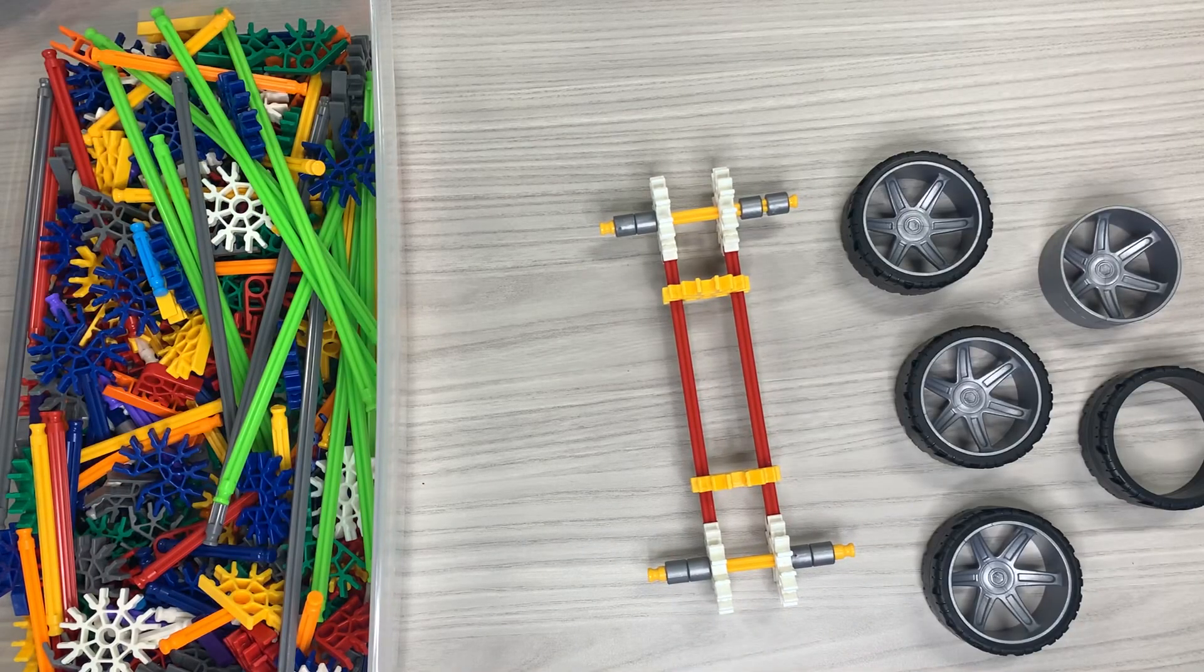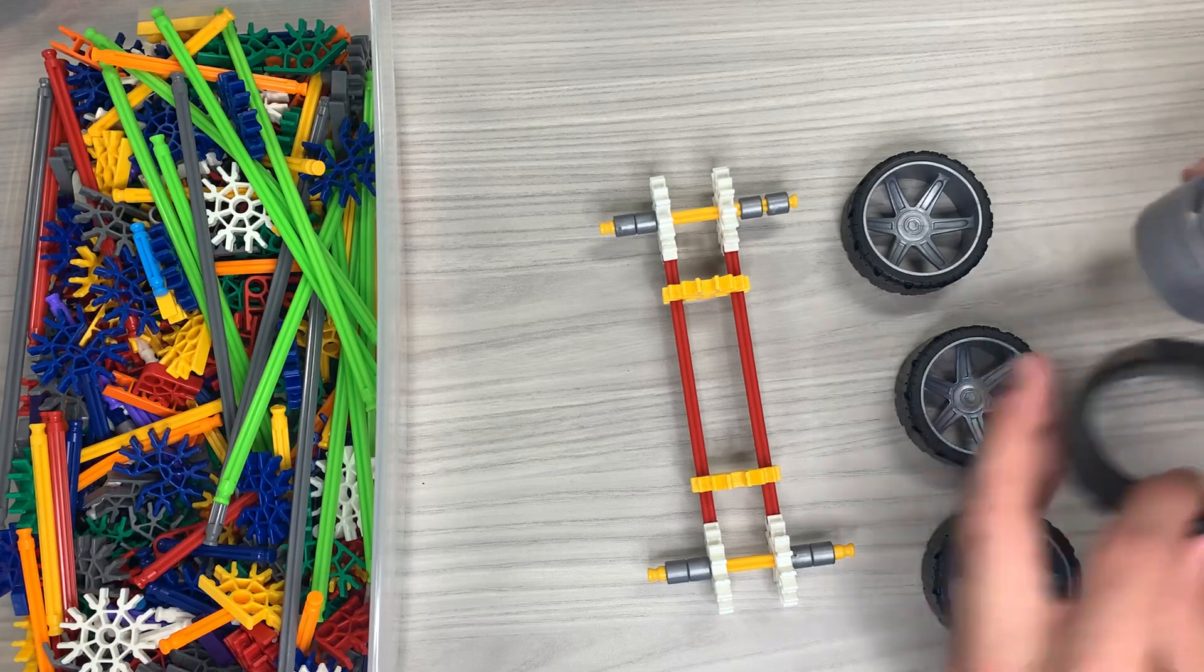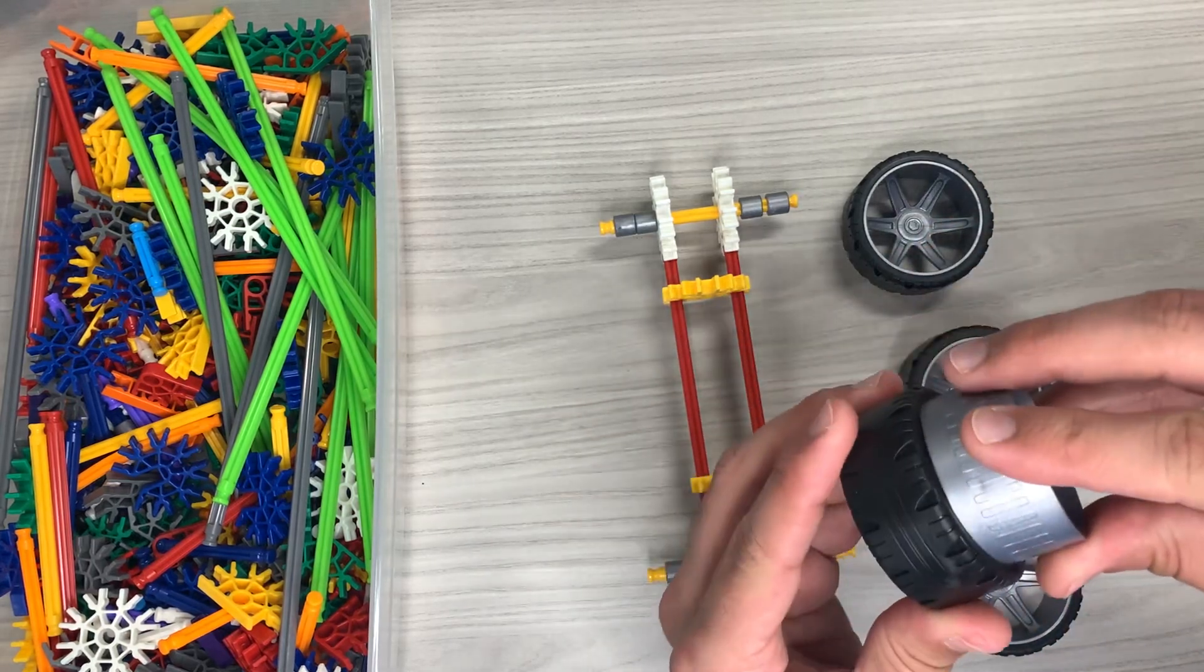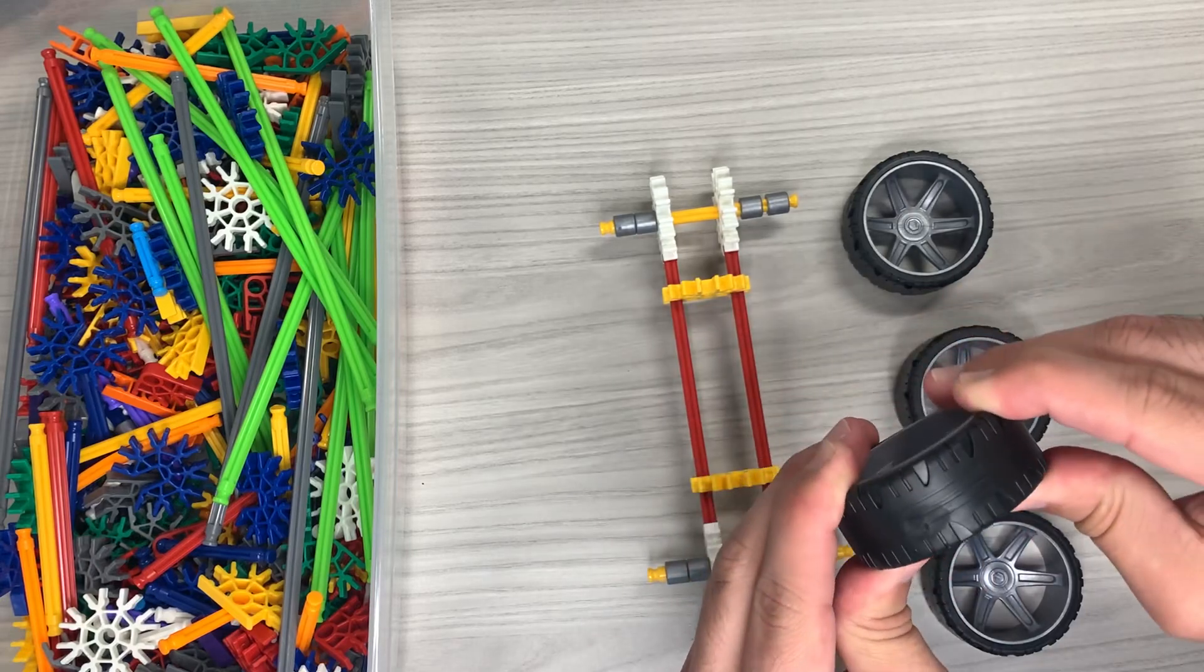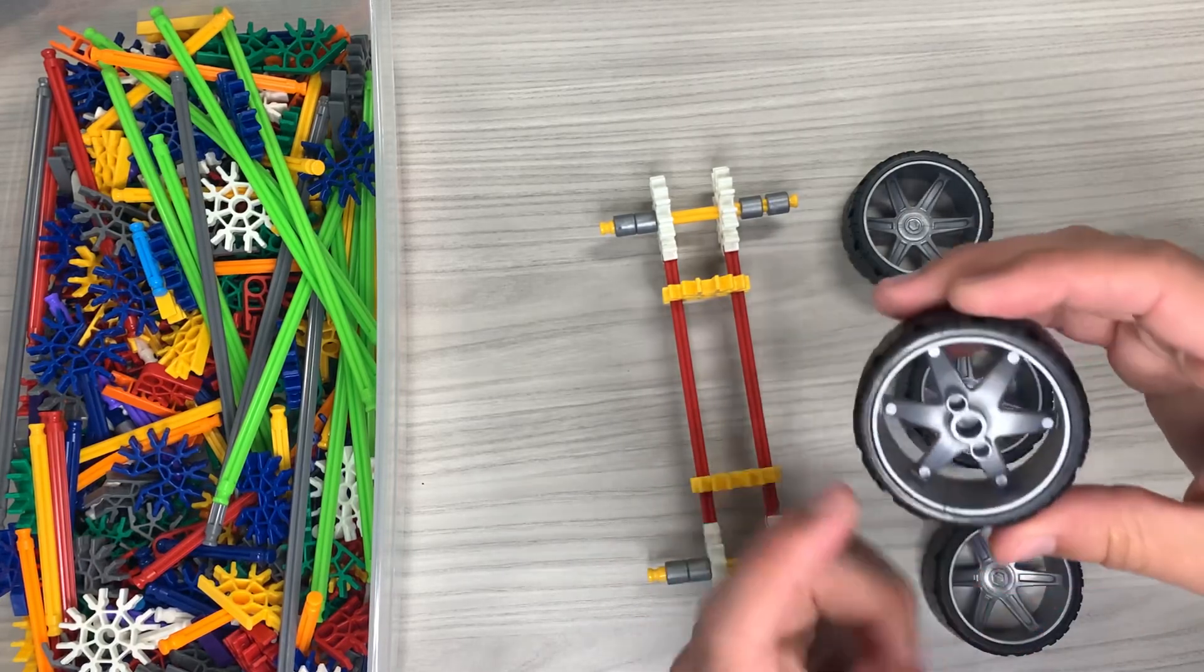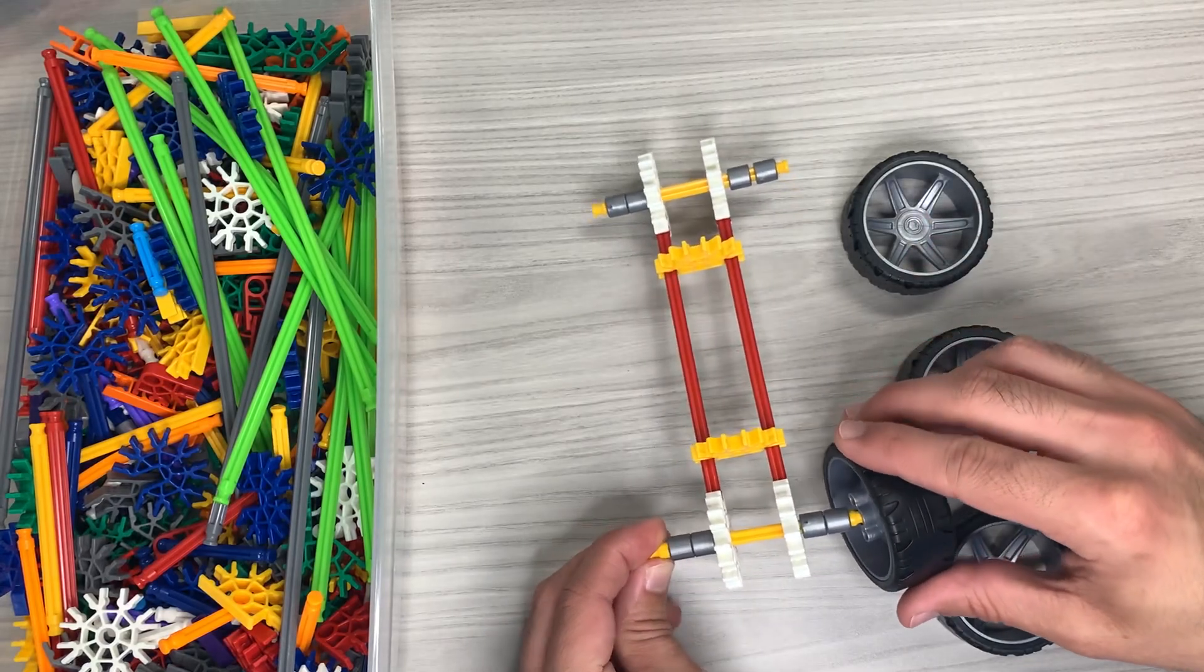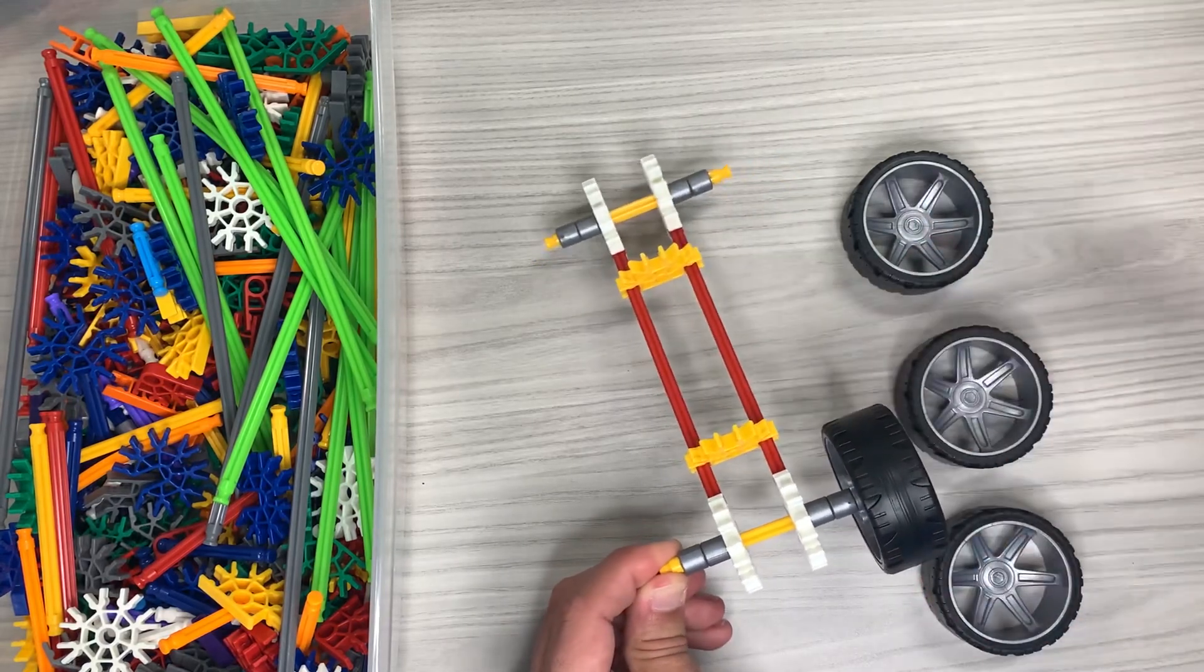All right and now for this next step we're going to need four tires and when they come in the package they come like this. You got the rim and then you have the wheel. So you got to assemble those. It doesn't really matter which way but this is your connector. You're going to go down to the yellow rod and you're just going to pop it on.